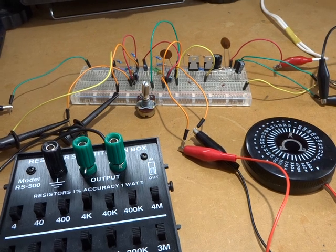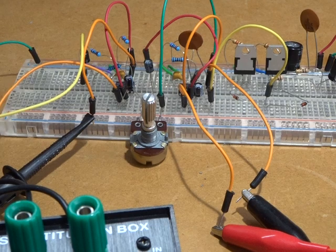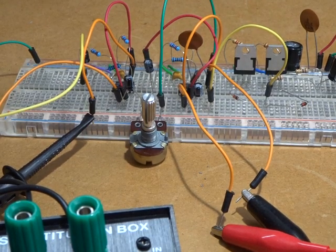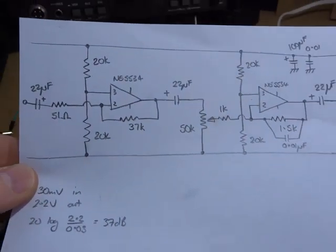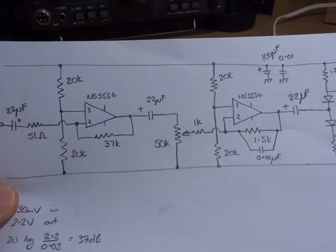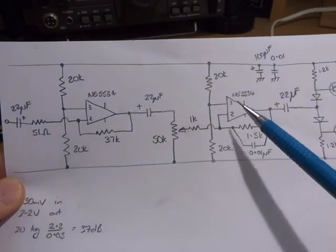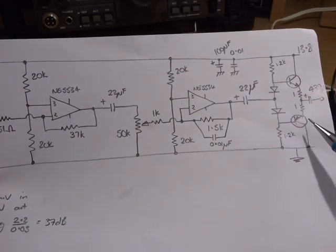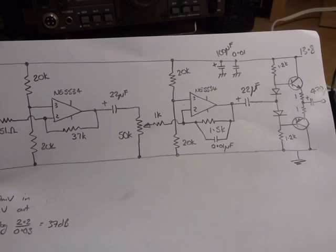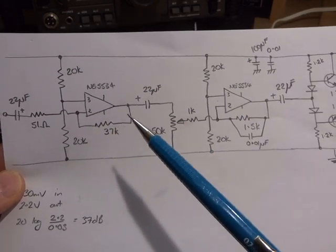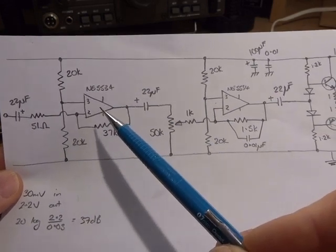What we have here is two NE5534s in series then leading into our push-pull amplifier there with the TIP32 and the TIP31. I'll talk about the gain distribution in a sec. The only differences from the other radio is I just grabbed out of the junk box a couple of resistors.